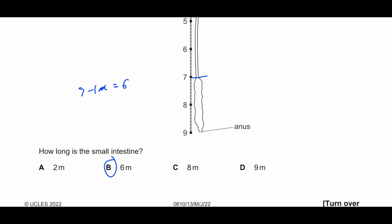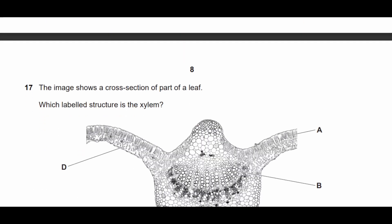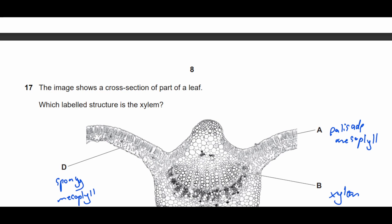Question seventeen: the image shows a cross section of part of a leaf. Which labelled structure is the xylem? A is palisade mesophyll — where most photosynthesis takes place. C is the lower epidermis where stomata are found. D is spongy mesophyll where gas exchange occurs. B is the xylem — it's inside the vascular bundle and has thicker walls made of lignin. Therefore the answer is B.